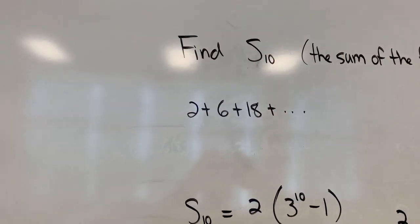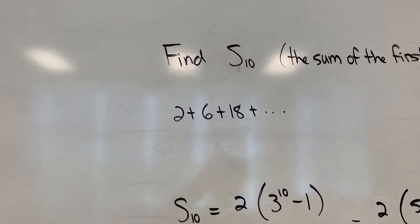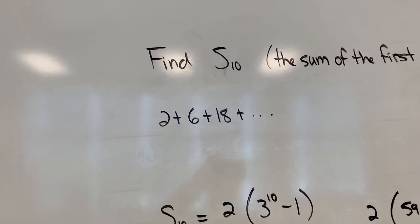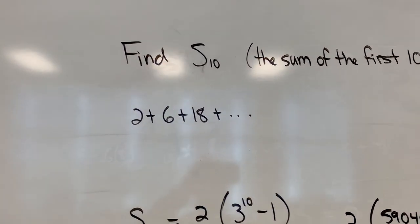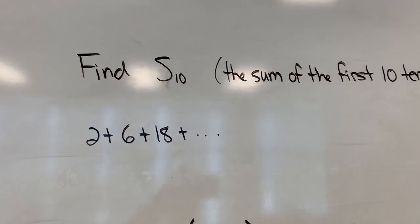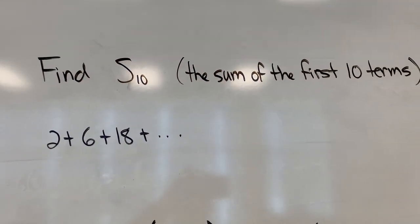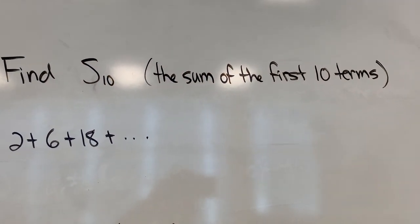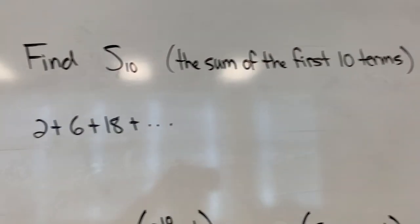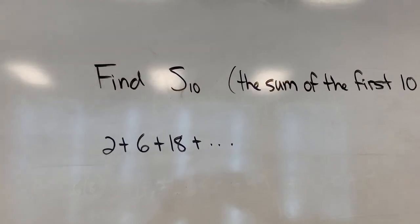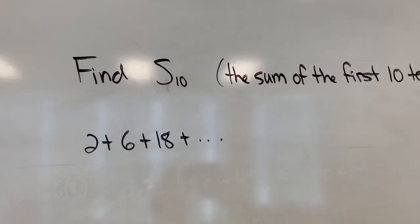And your final answer is maybe a surprisingly big number, 59,048. Seems like how would we possibly just add these little numbers and get to 59,000? But if you think about what's happening with these numbers, in fact, if you wrote out the next few, you'd add 54, add 162, add 486, and so on. And the numbers get pretty big pretty fast. So by the 10th term, you'd be adding a pretty huge number.